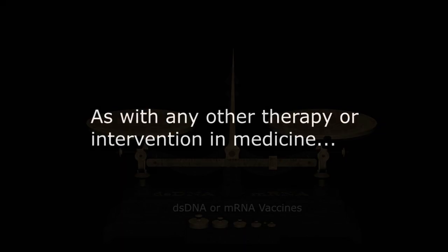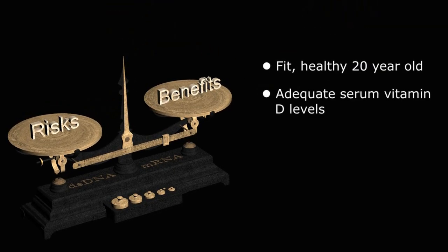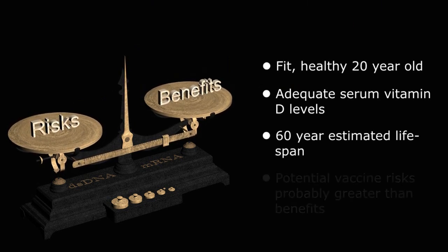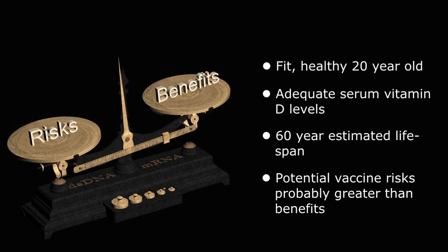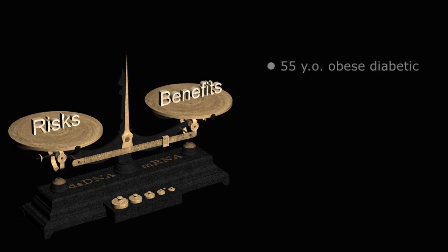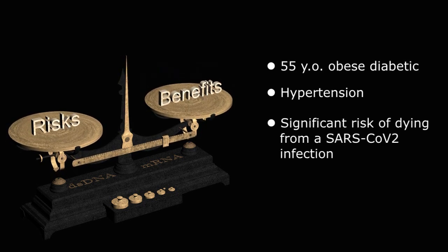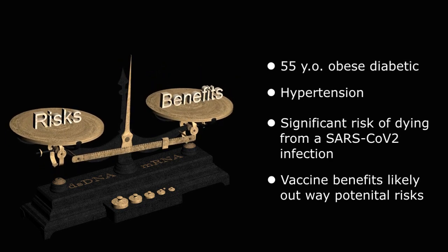At the end of the day, as with any other therapy or intervention in medicine, it comes down to risk versus benefits. In a fit, healthy 20-year-old with adequate serum vitamin D levels and an estimated 60 years of life expectancy, the potential risks of a novel genetic vaccine are probably greater than any possible benefit and, therefore, should probably not be administered to this particular individual. However, in a 55-year-old obese diabetic with hypertension, the risk of dying from SARS-CoV-2 infection is substantial and, therefore, the benefits of monovalent vaccination far outweigh both the potential risk of the vaccine and the disease itself.